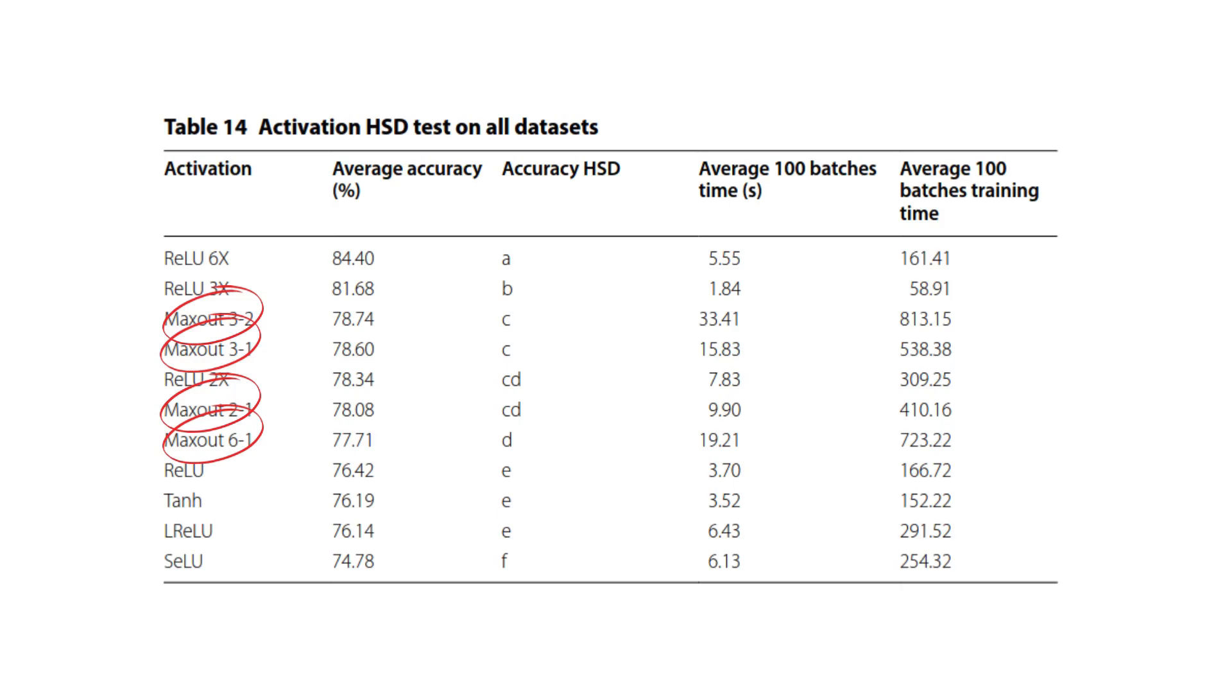From this final result table, we can see the maxout variants are good. However, in overall performance, they are much slower. Yet, the most important aspect in this study was that ReLU, with 3 or 6 times more neurons than regular ReLU network, was outperforming all maxout variants in general. This means that when matching for neurons per layer, ReLU had overall better results.